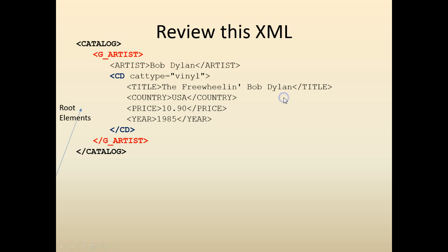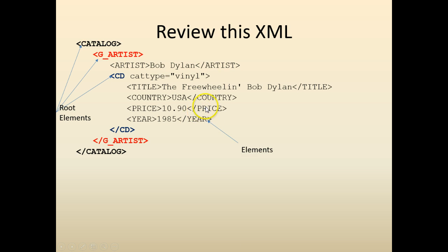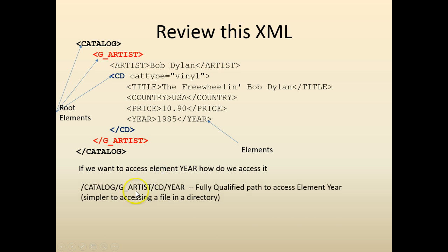Let's review the XML. This XML has multiple root elements — an element and multiple elements called year, price, and country. So if you want to access the element year, we have to use the fully qualified path, which is catalog — which is a root element — then another root element, then CD, then year.